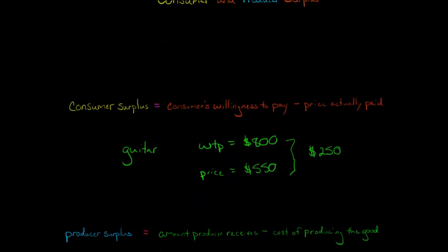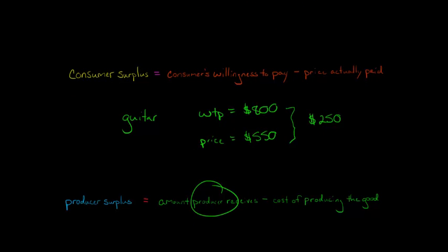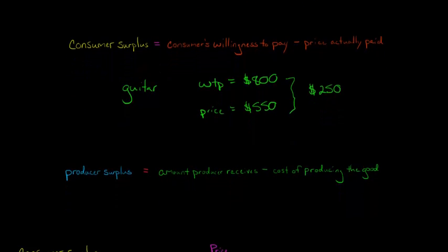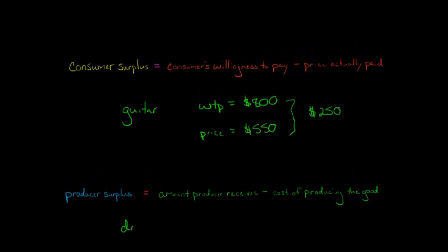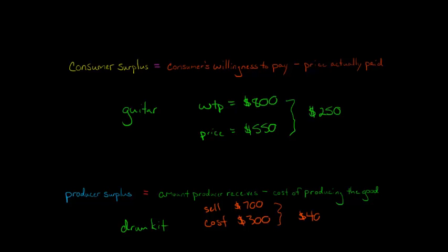Producer surplus is the amount that the producer receives minus the cost of producing the good. Let's say there's a producer that makes drum kits and it costs them $300 to produce a drum kit, but they sell it for $700. Their minimum cost to break even was $300, but they get $700, so the difference — which you can think of as profit — is producer surplus of $400.